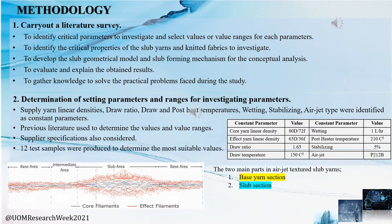The literature survey was the first step of our methodology. It helped us in identifying the critical parameters of slab yarns and the critical properties of slab yarns and knitted fabrics to investigate. The knowledge gained also helped us in developing the slab geometrical model and slab forming mechanism for conceptual analysis. The second step was determination of setting parameters and ranges for the investigation parameters.